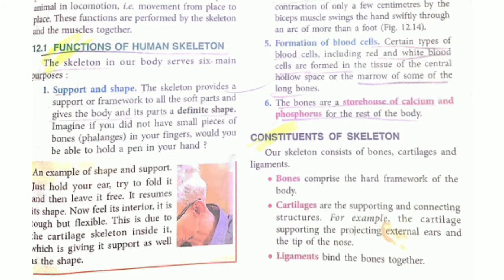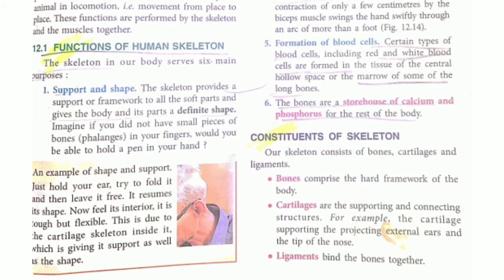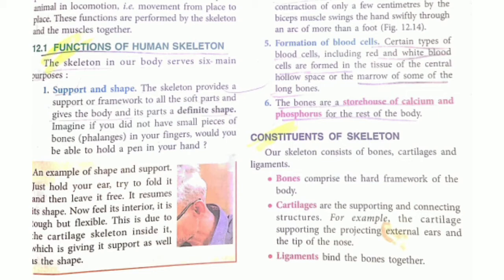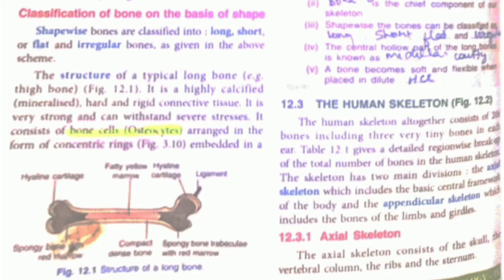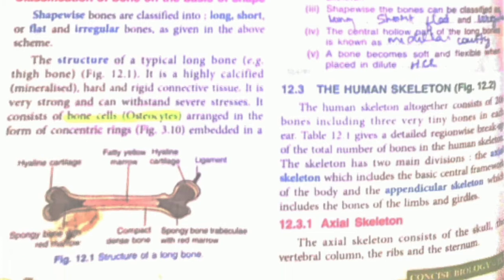The next chapter is skeleton, movement, and locomotion. Learn the functions of the human skeleton — at least five functions. Learn the concept of the human skeleton, what is bone, and this diagram: the structure of the long bone, where the bone marrow is found — yellow bone marrow and all that. You should know the human skeleton briefly.